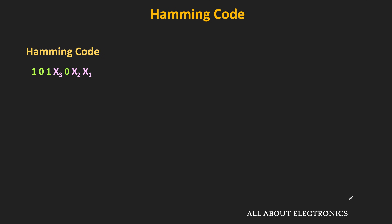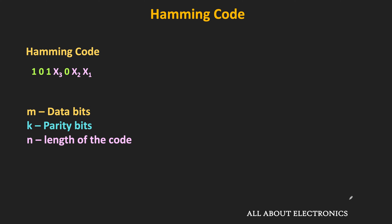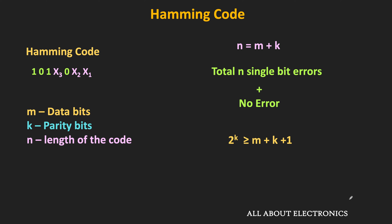Let's say there are m data bits and k parity bits, and n is the length of the code, meaning n = m + k. In an n-bit code, a total of n single-bit errors can occur. So these k parity bits should be able to recognize n different errors. Moreover, they should also identify the state of no error. That means the k parity bits should identify a total of n+1 different conditions. Using k parity bits in binary, we can represent 2^k states, so 2^k must be greater than or equal to n+1, or equivalently, greater than or equal to m + k + 1. This is the necessary condition for the Hamming code.